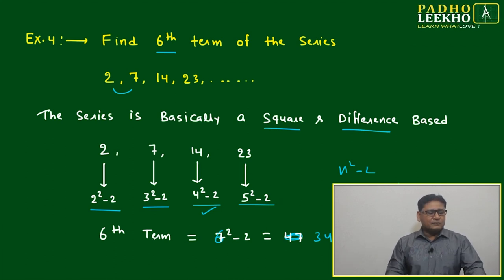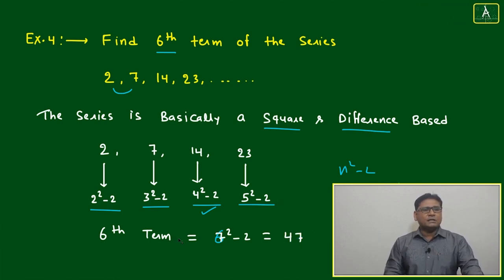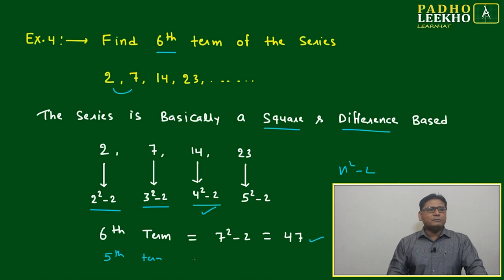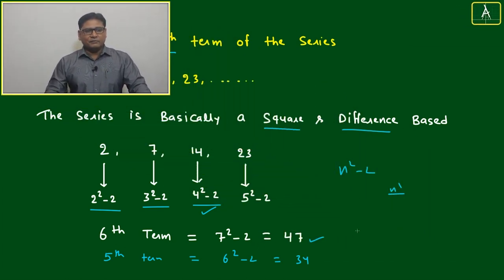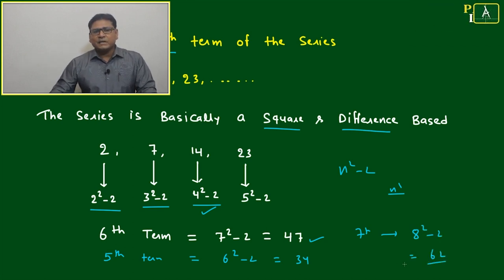It will be 7² - 2, which is 47. Your fifth term will be equal to 6² - 2, that is 34. Similarly, we can find the seventh term. It will be 8² - 2, which is 62.